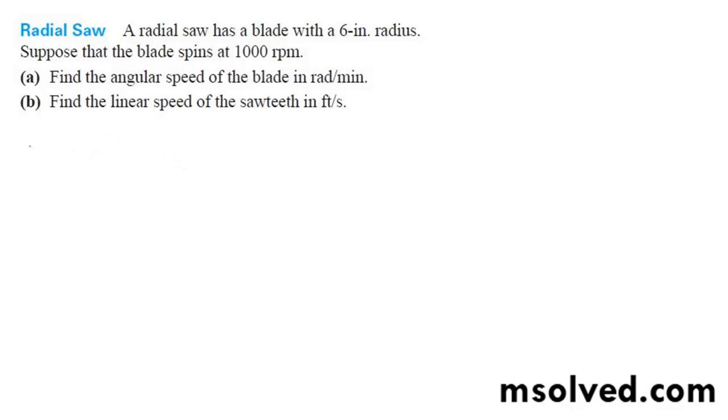So starting off here, radians per minute is going to be 1,000 RPM, so it's going to be 2 pi times 1,000, and that's pretty much it, it's just 2,000 pi radians per minute.